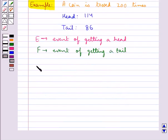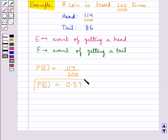Now probability of getting a head is given by P(E). This is equal to number of heads coming up, that is 114, upon the total number of trials, and that is 200. This comes out to be equal to 0.57. So probability of getting a head is 0.57.